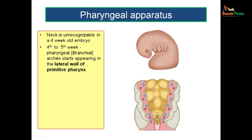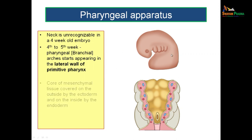When you look at this region, you know that the neck is not properly developed. In this region of the primitive pharynx — this is the side view, meaning the lateral wall of pharynx — you can see many arches. These are U-shaped arches lying on the ventral aspect of the primitive pharynx. They are not encircling the entire neck; they are just seen as U-shaped arches on the ventral aspect of the primitive pharyngeal wall.